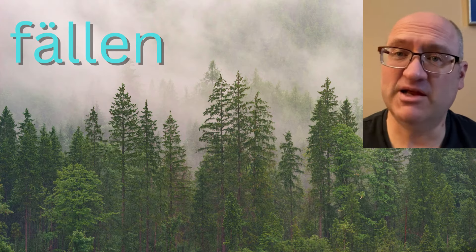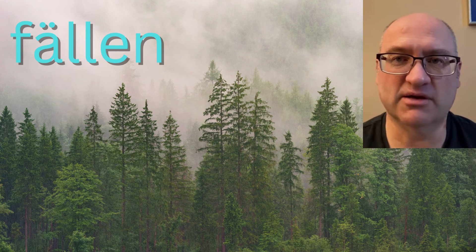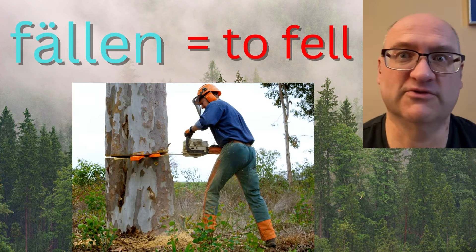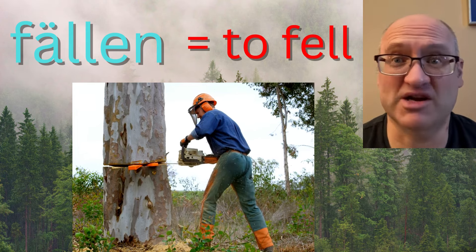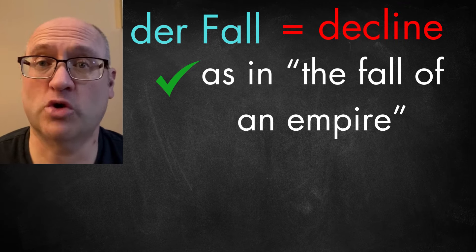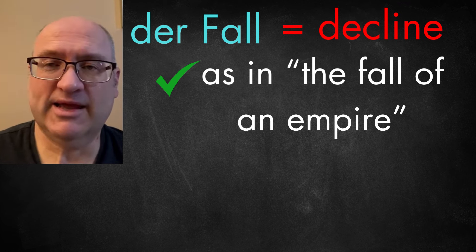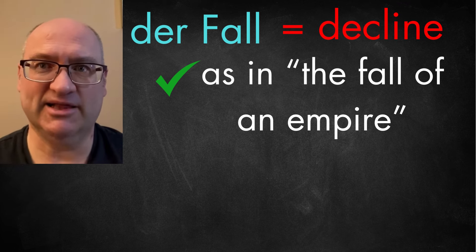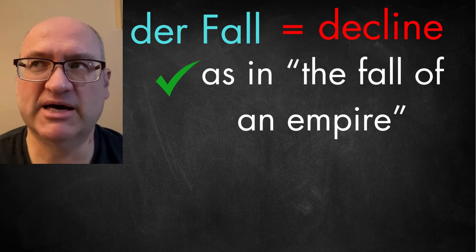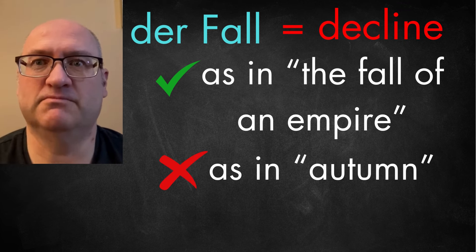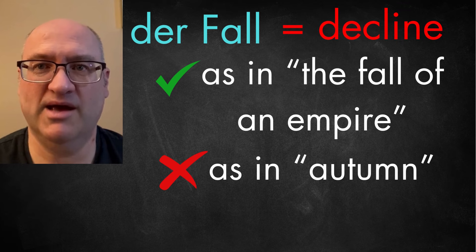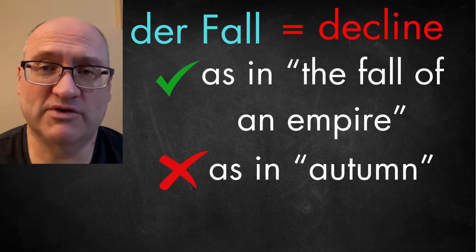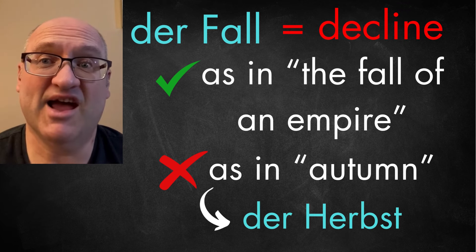The German verb 'fällen' means something completely different — it means basically the same thing as the English verb 'to fell,' to fell a tree, to knock a tree down. The German noun 'der Fall' can be a little bit confusing. It means the same as the noun 'decline,' but it does not mean autumn as the English word 'fall' can mean. In German, we have a different word for that: 'der Herbst.'